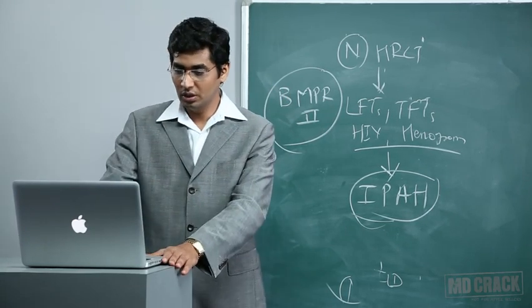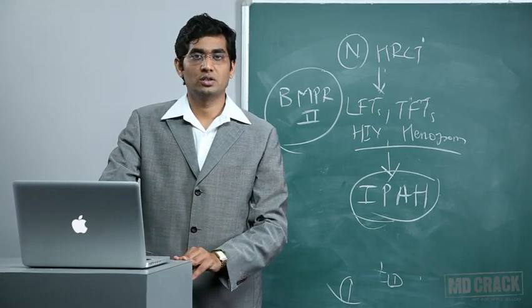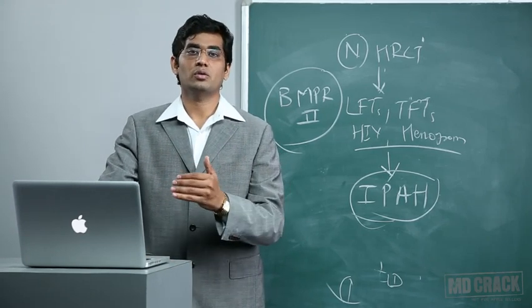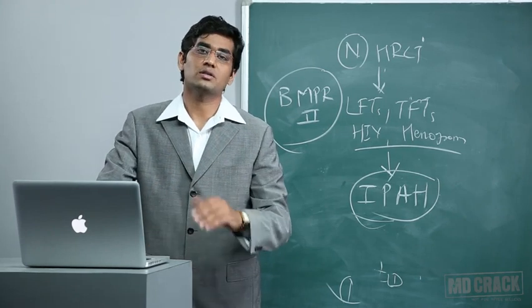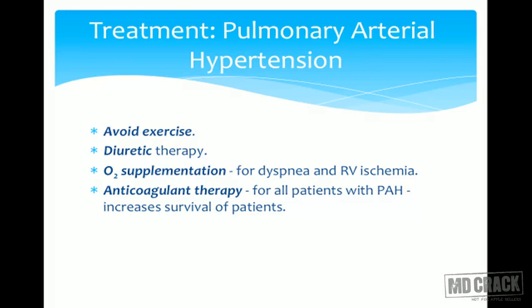Regarding treatment of pulmonary arterial hypertension: patients should avoid exercise, as it increases pulmonary hypertension and worsens the disease. Diuretic therapy should be started to correct right ventricular failure. Patients benefit from improved exercise tolerance with diuretics.